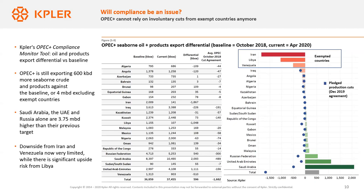A lot of this was impacted by the decision from Saudi Arabia and the UAE to produce and export more in April. But even before that, we were quite far from pledge targets. In fact, if you exclude the exempt countries — Iran, Libya, and Venezuela, visible at the top of the chart — we are actually 4 million barrels per day higher than the previous cut targets. Saudi Arabia, the UAE, and Russia alone are about 3.75 million barrels per day higher. This really shows who triggered the oil price war over the past few weeks.